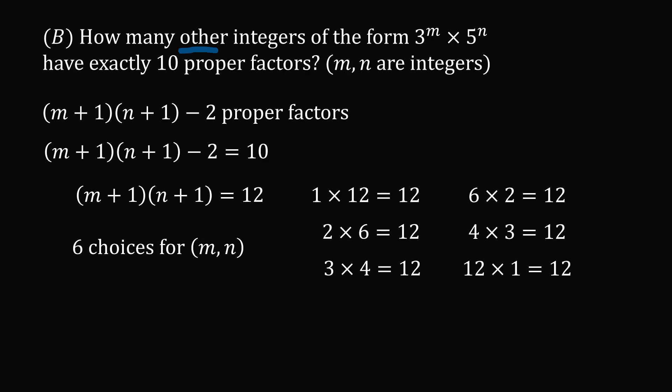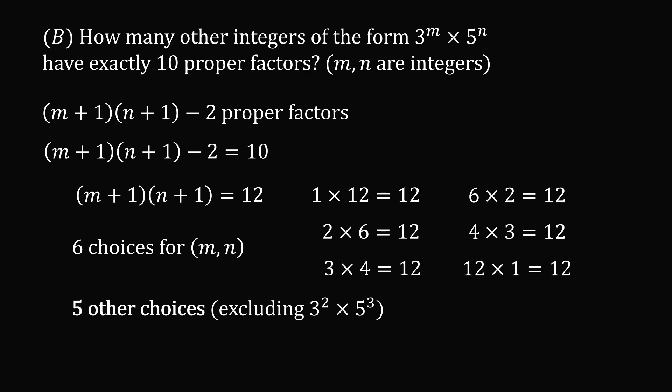But this question is a little bit tricky — it asks how many other integers of this form there are. We have already used one solution for 3 squared times 5 cubed, so there are 5 other choices. That is the official answer, and the correct answer is indeed 5 other choices.